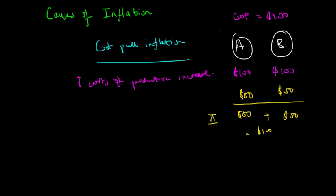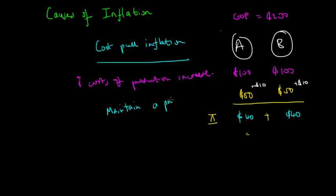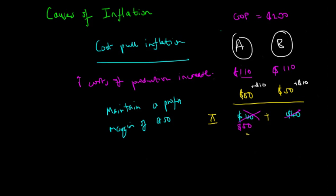Now assume labour costs increase so that it costs $60 to produce each product. Instead of a $50 profit, the firm now earns only $40 profit per product. Because the business wants to maintain a profit margin of $50 and cannot cut its costs, it will increase its price. Assuming demand stays relatively the same, instead of charging $100 per product, they increase to $110, restoring the profit to $50.